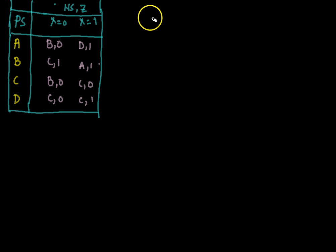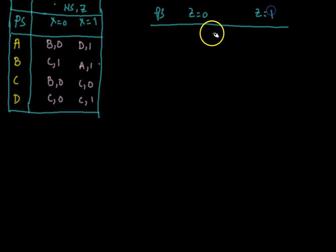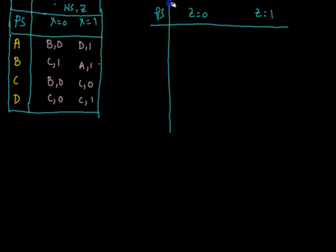First we need to develop the testing table. The upper part of the testing table is the output successor table. It is built with present states as rows, and each column corresponds to an output symbol. Since the output alphabet contains 0 and 1, we have two columns. The upper part contains states a, b, c, and d.